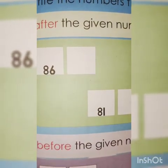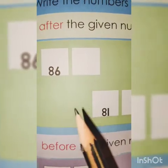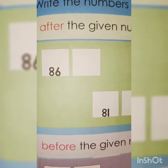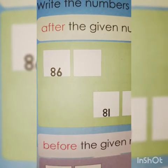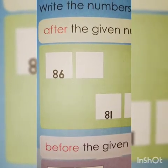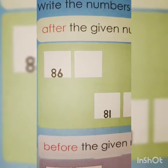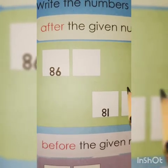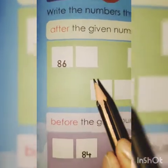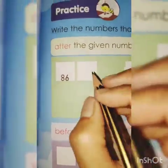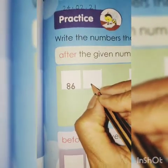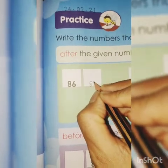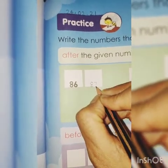Start counting from 81: 81, 82, 83, 84, 85, 86, 87. So write down here: 87.